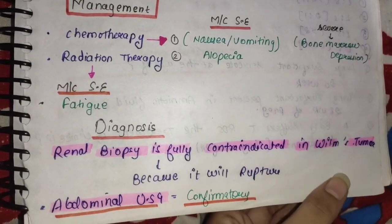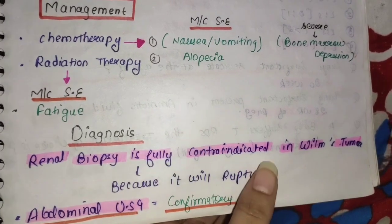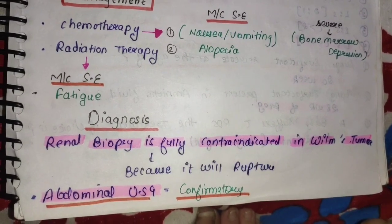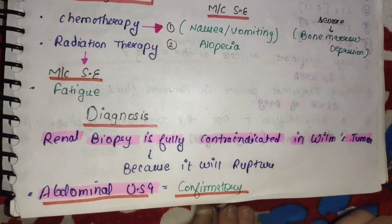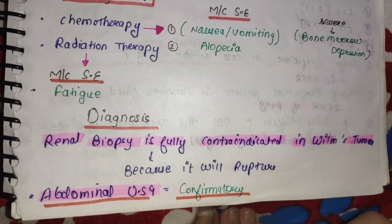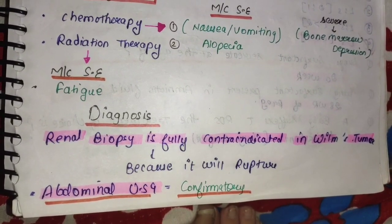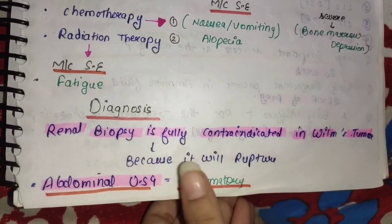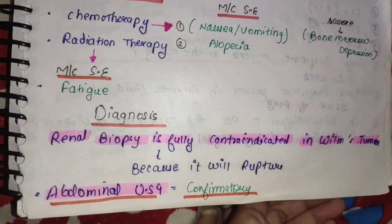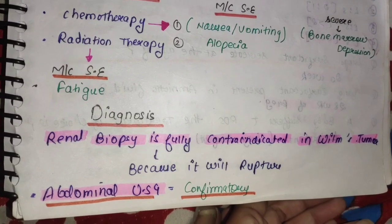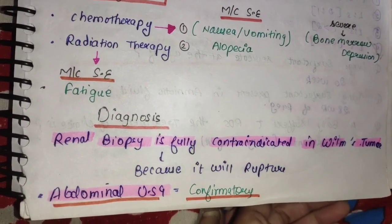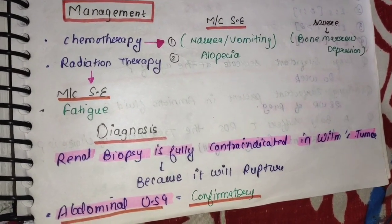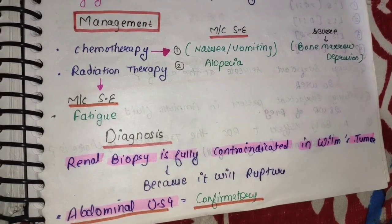Diagnosis: Renal biopsy is fully contra-indicated in Wilms tumor — जो renal biopsy होती है, बिल्कुल perform नहीं की जाती Wilms tumor के अंदर, because अगर renal biopsy perform की गई तो it will rupture the tumor. इसमें abdominal ultrasound perform किया जाता है, जो confirmatory diagnostic test होता है Wilms tumor को diagnose करने के लिए. And पalpation भी fully contra-indicated होता है — tumor वाले area को palpate भी नहीं करना होता.